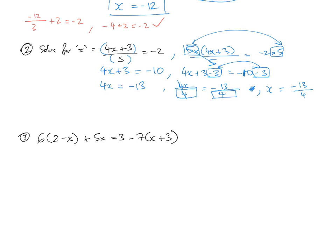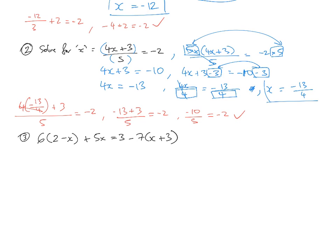So that's the answer for that one. Let's double check: 4 lots of x, which we said is negative 13 on 4, plus 3 on 5, is equal to negative 2. The 4s cancel out, so you've got negative 13 plus 3 on 5 equals negative 2. Negative 13 plus 3 is negative 10. Is negative 10 divided by 5 negative 2? Yes, that's correct. So the answer must be x is equal to negative 13 on 4.